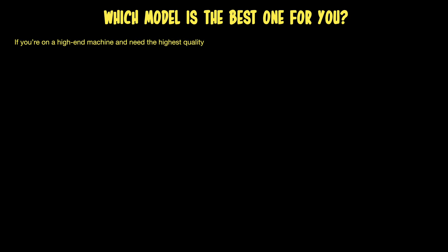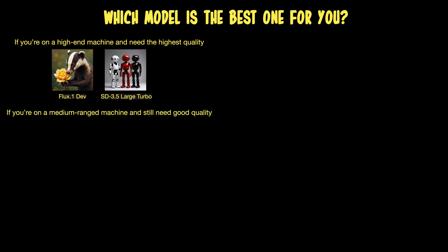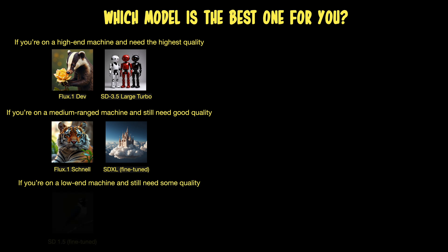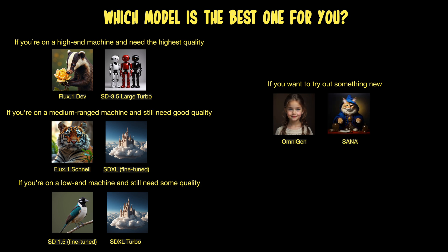So what could be the best model for you? Well, it depends. If you have a high-end machine with a powerful GPU and lots of VRAM, I would recommend Flux.1 Dev, maybe also Stable Diffusion 3.5 Large Turbo. If you are on a machine with a medium-ranged GPU and still need good quality, you might choose Flux.1 Schnell or a fine-tuned SDXL model. If you want to get the best out of a lower-end machine, you could go with a fine-tuned Stable Diffusion 1.5 or an SDXL Turbo model. And if you want to try out something new, you might go for OmniGen or SANA — please note that you need a powerful NVIDIA GPU for both of these models. But of course, that's only my own personal view. Make your own choice.